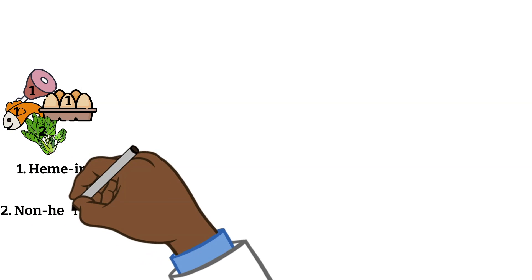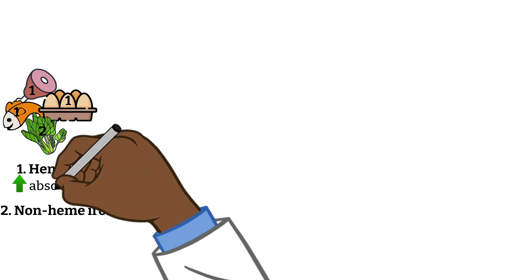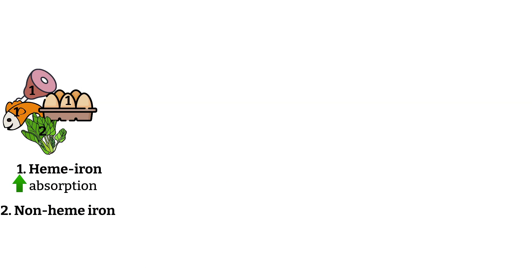Non-heme iron comes from plants and iron-fortified foods. The heme iron has better absorption than the non-heme. It also has a higher bioavailability, meaning more iron will reach the bloodstream from the GI tract.